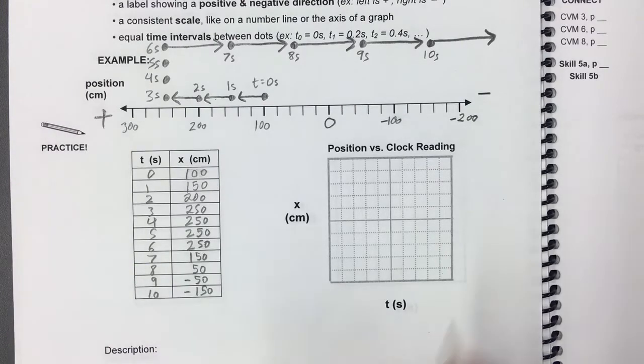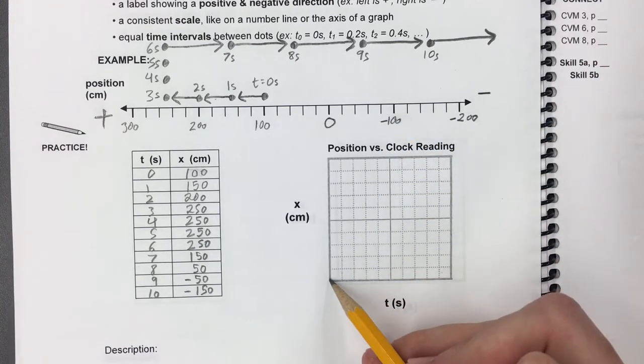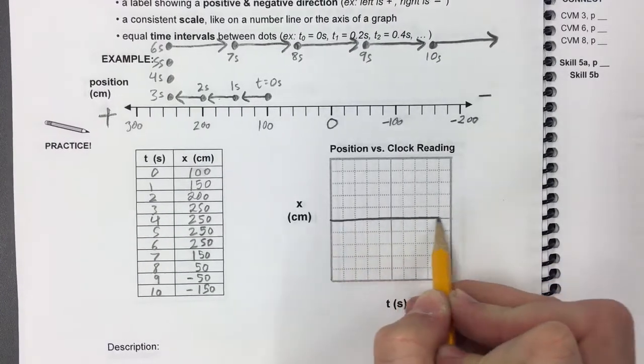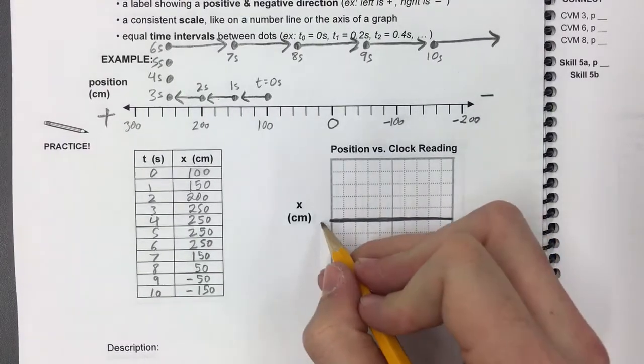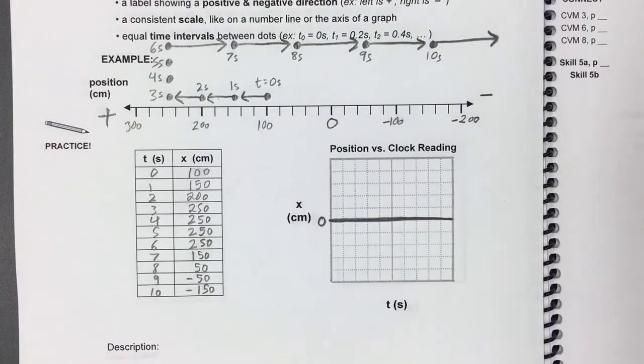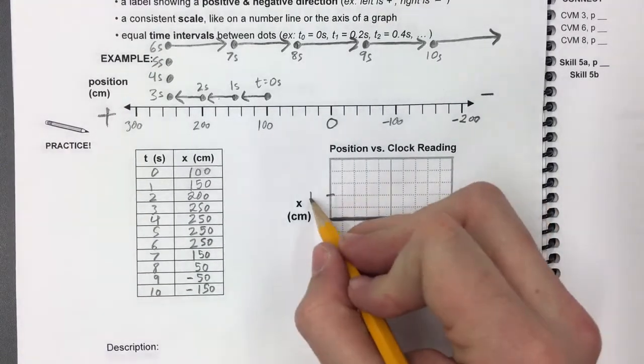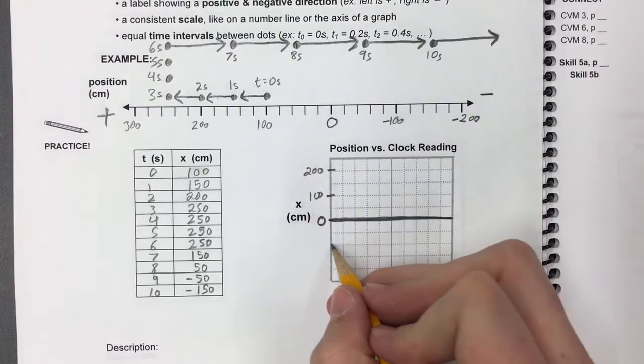One thing that's a little weird about this position versus clock reading graph is that the zero point needs to be somewhere other than right here. I'm going to actually put the zero for position in the middle of the graph, and I'm going to label the positive part of the graph here with positive 100 and 200.